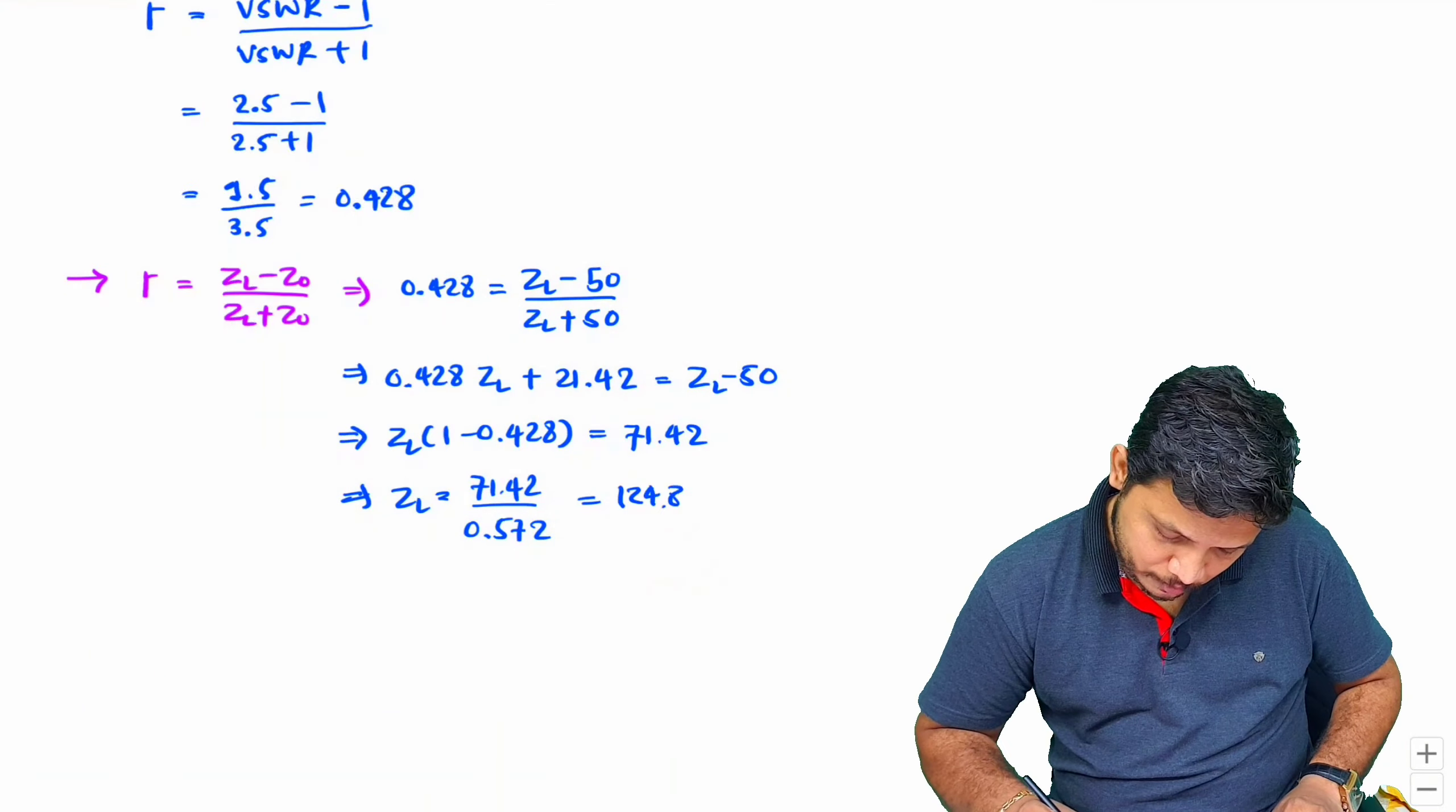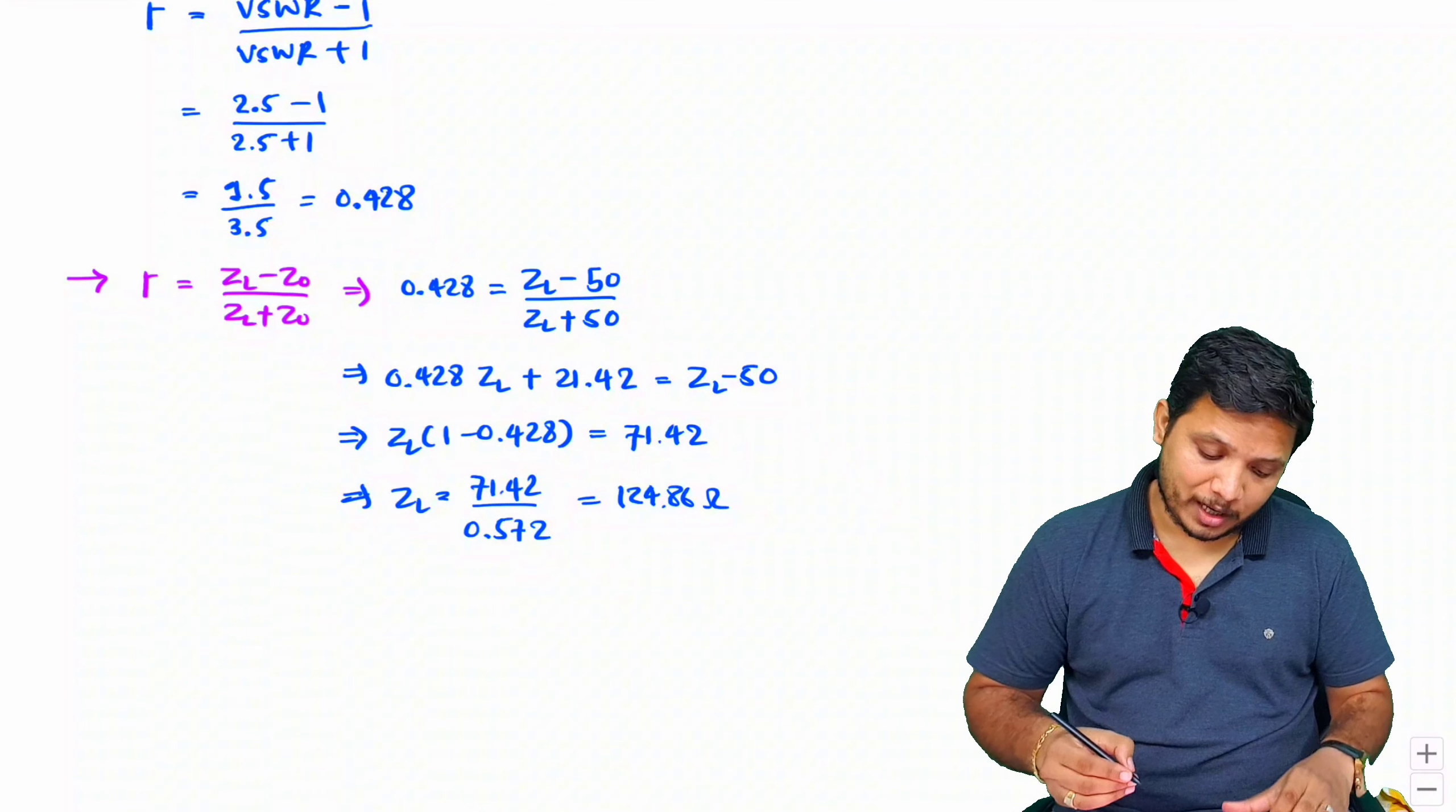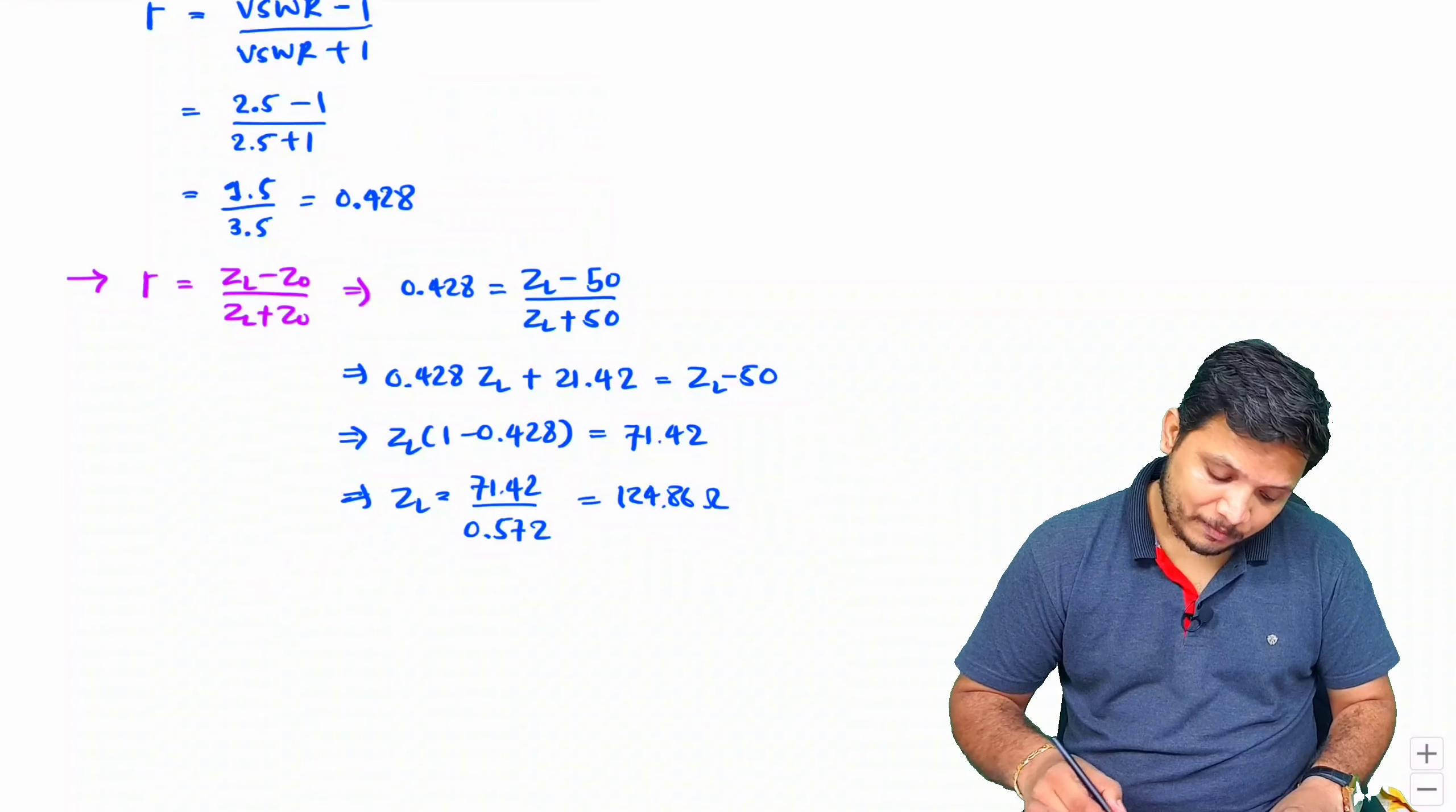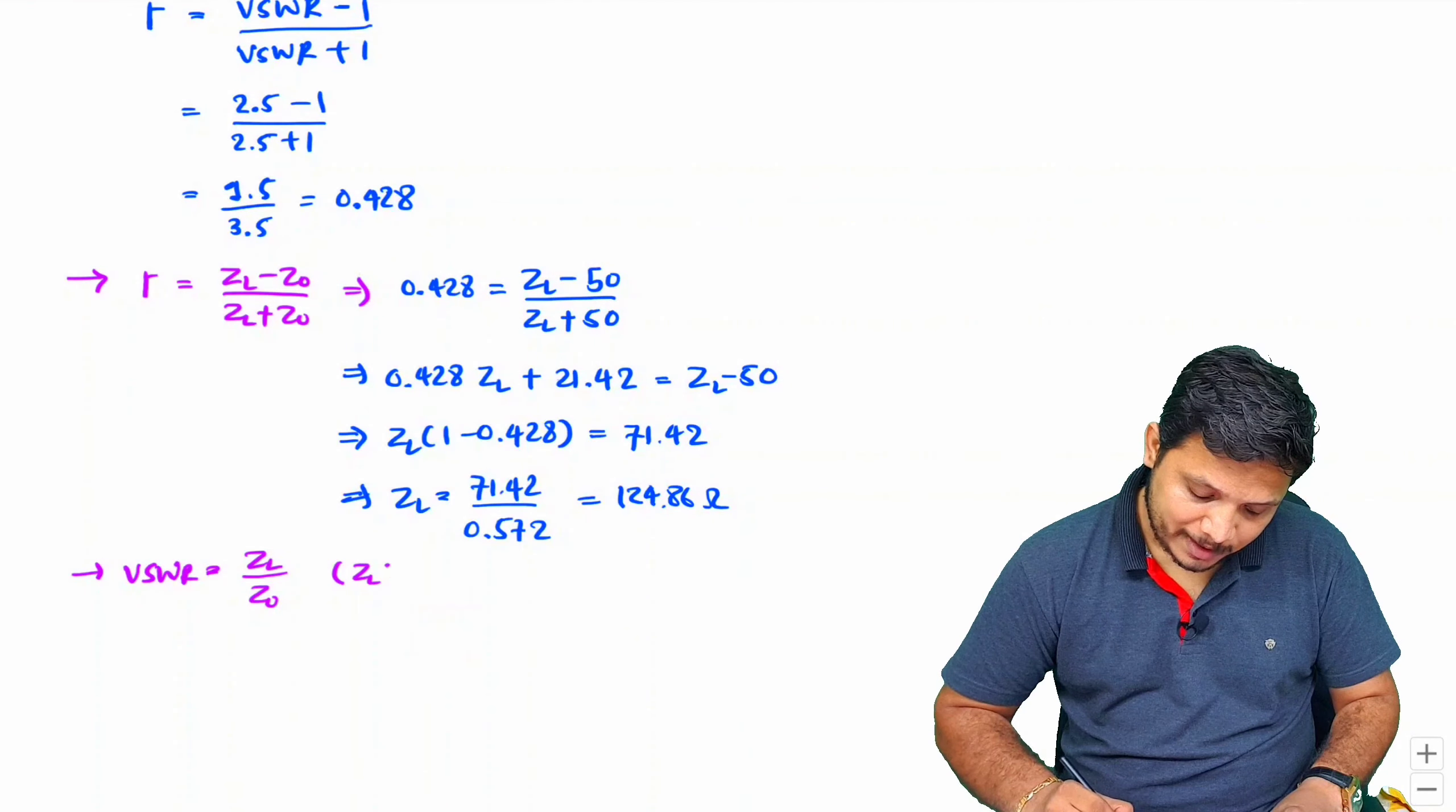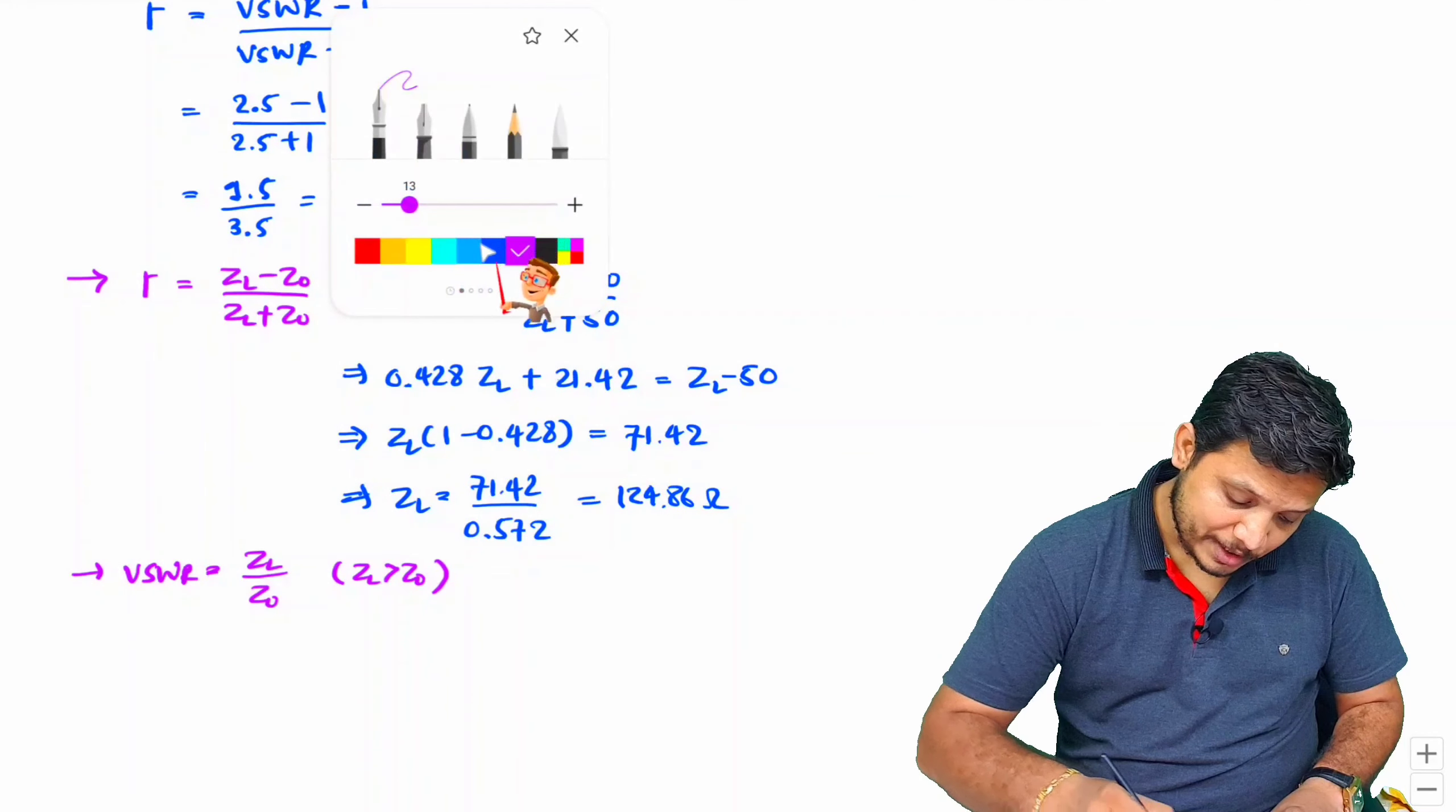As I told you, there is one more way to calculate ZL based on VSWR. Here, if I consider VSWR equals ZL by Z0, where this is for the case where ZL is greater than Z0.